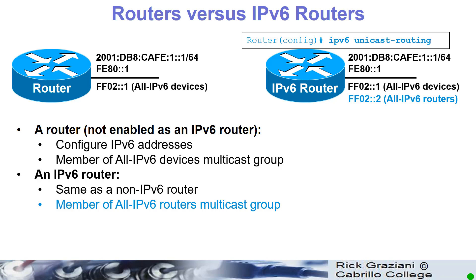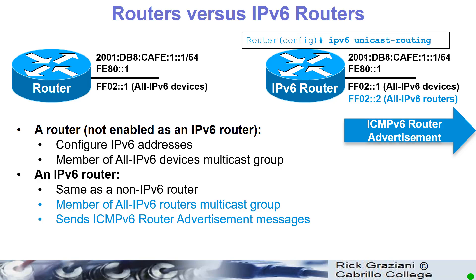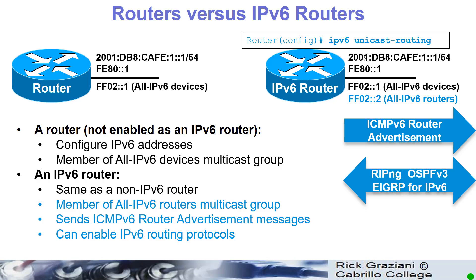With IPv6, you end up with multiple addresses — all on that interface. Neither multicast address: other devices respond to the two ff addresses. But the fe80::1 link-local and the global unicast address 2001:db8:... are both on that particular interface for that link. The global unicast is globally routable, but the fe80 is that local link address. This will send ICMPv6 RA messages and can enable IPv6 routing protocols: RIPNG, OSPFv3, and EIGRP for IPv6. We'll talk more about OSPFv3 and EIGRP for IPv6 in the following two chapters.